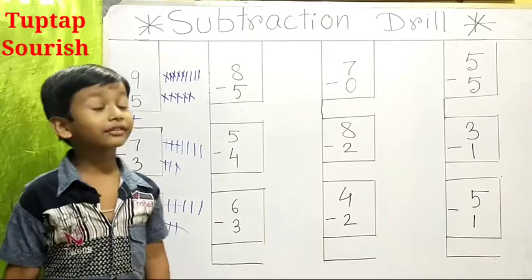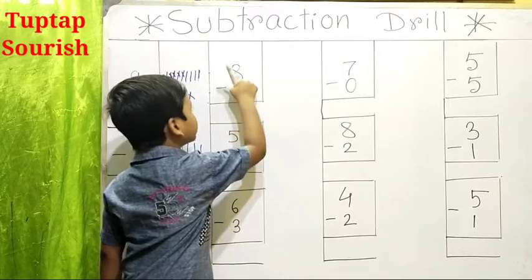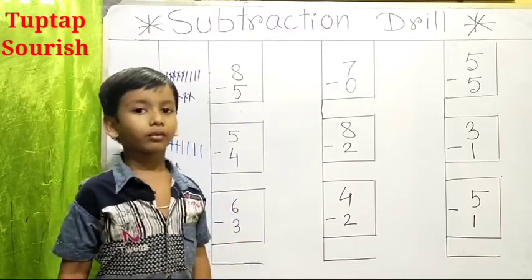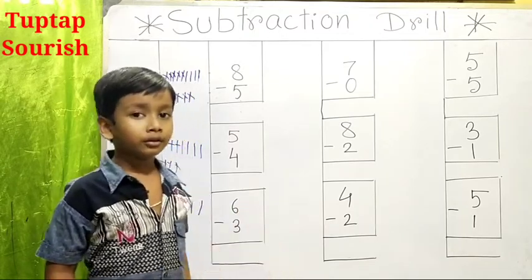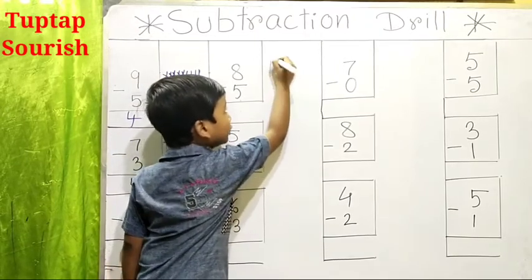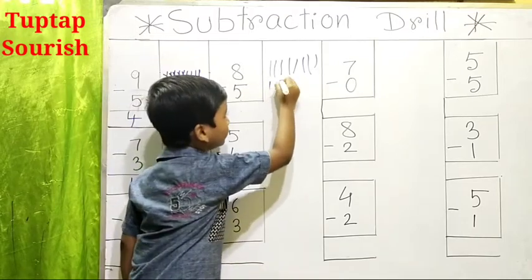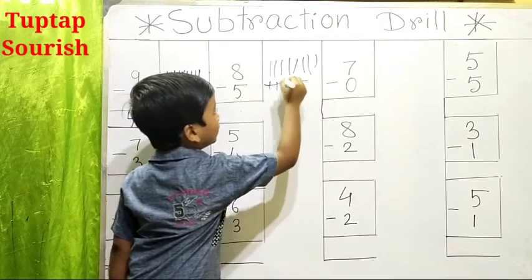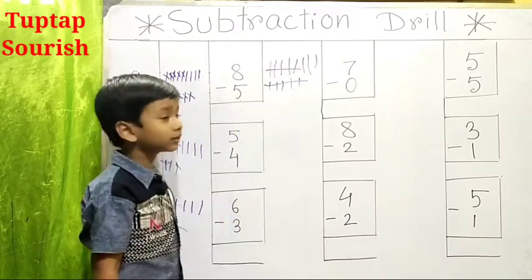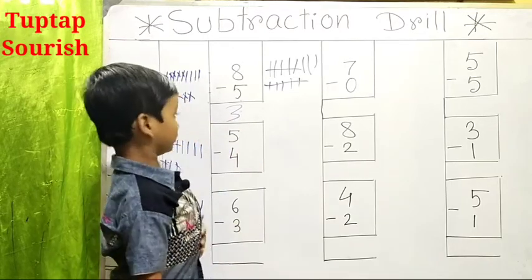Let us do more examples. Next example is 8 minus 5. You think you have got 8 chalks and you broke 5 of them. So let's draw 8 lines: 1, 2, 3, 4, 5, 6, 7, 8. We have to draw 5 here: 1, 2, 3, 4, 5. We cut 5 and we have to cut here also 5 of them. So how many left? 1, 2, 3. So our answer is 3.